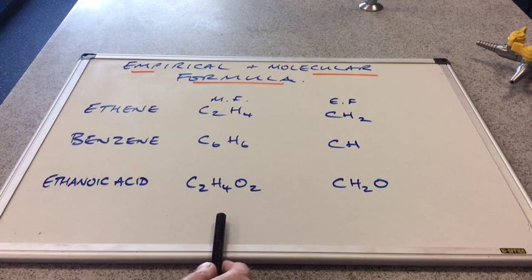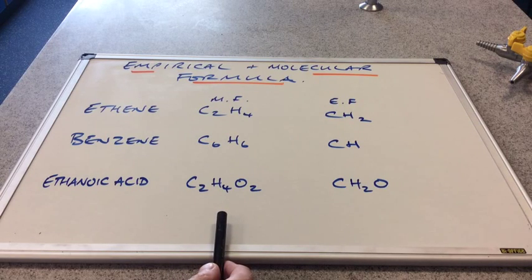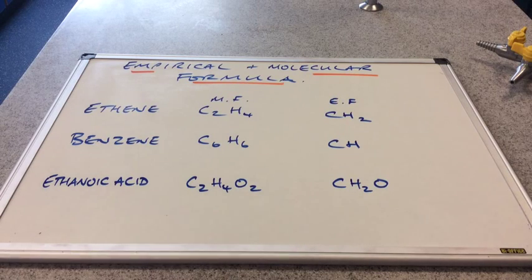And this first column is their molecular formulae. So ethane, two carbons, four hydrogens. Benzene, six carbons, six hydrogens. And ethanoic acid, two carbons, four hydrogens, and two oxygens. So that's the molecular formula. That's the actual formula of the molecule.